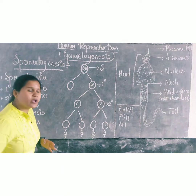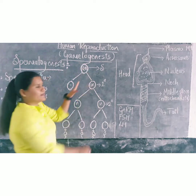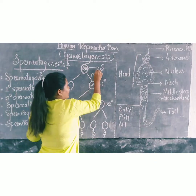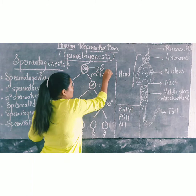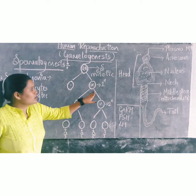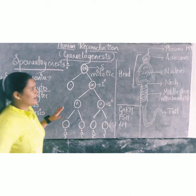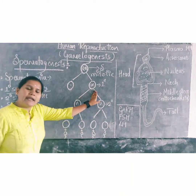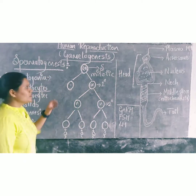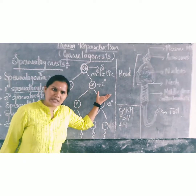This spermatogonia undergoes — this is a spermatogonia which is diploid in nature. So this undergoes mitotic division and forms many cells. Those are called primary spermatocytes. These are the diploid primary spermatocytes.